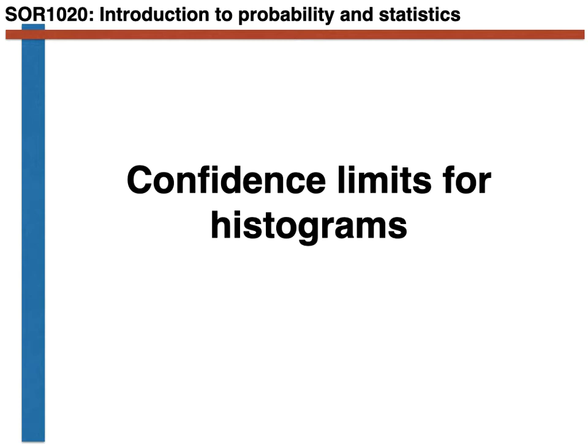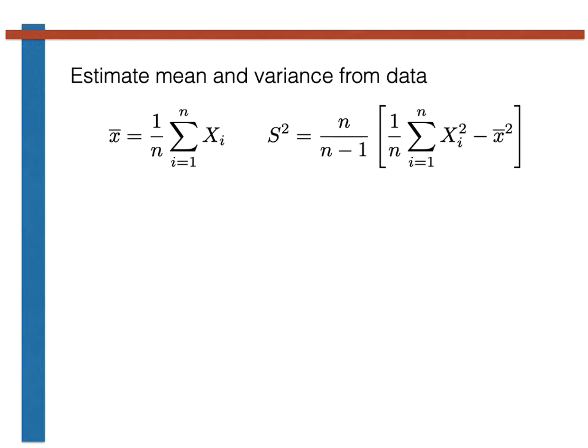When this method is used, we start by estimating the sample mean and sample variance from our experimental results, the x_i's, using the expressions shown here.